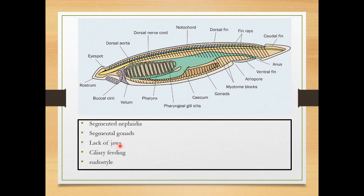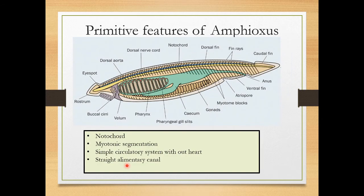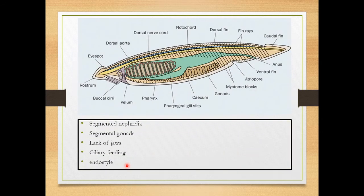There is a lack of jaws, showing primitive characters. Ciliary feeding is present — even though Amphioxus is a chordate, it feeds by ciliary mode. The endostyle is present, which represents the thyroid gland in modern animals. The presence of the endostyle indicates it is a primitive animal. These are the characters belonging to the primitive features.